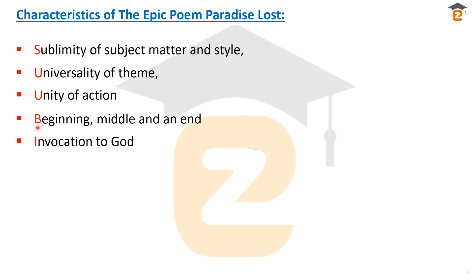Next we have beginning, middle, and end. This epic poem has a beginning, a middle, and an end because the story talks about the fall of man — how God forbade, how Eve and Adam were enjoying their life in heaven, and after they disobeyed God's order, how they were expelled from heaven along with Satan and Lucifer, and later how they sought to regain what was lost.